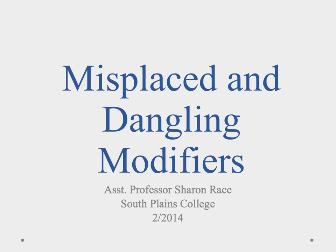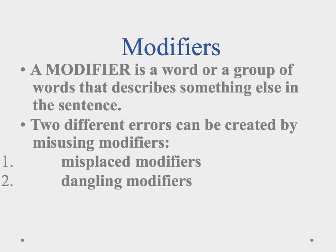Hello, Professor Race here to talk about misplaced and dangling modifiers. First of all, a modifier is a word or a group of words that describes something else in the sentence. Two different errors can be created by misusing modifiers: there is the misplaced modifier error, which is usually marked with M-M, or there is the dangling modifier error. And we'll talk about both.